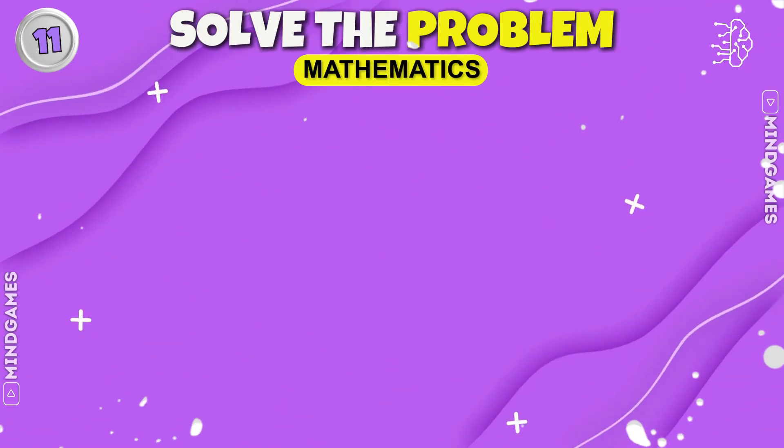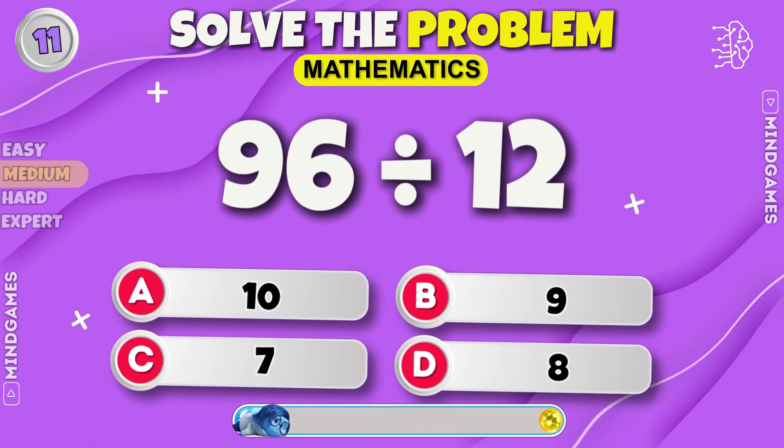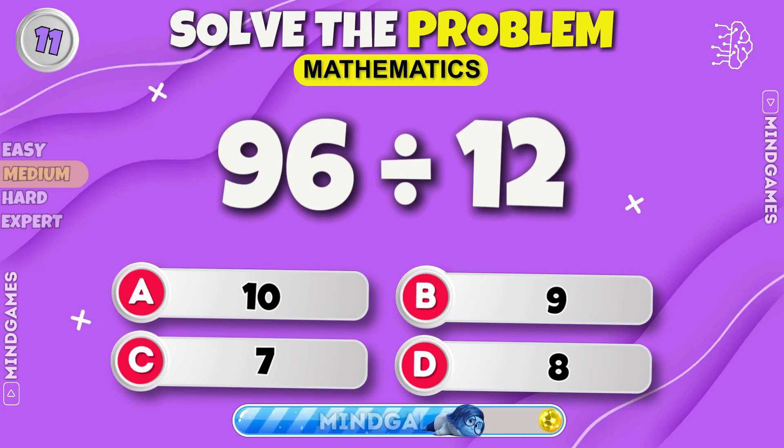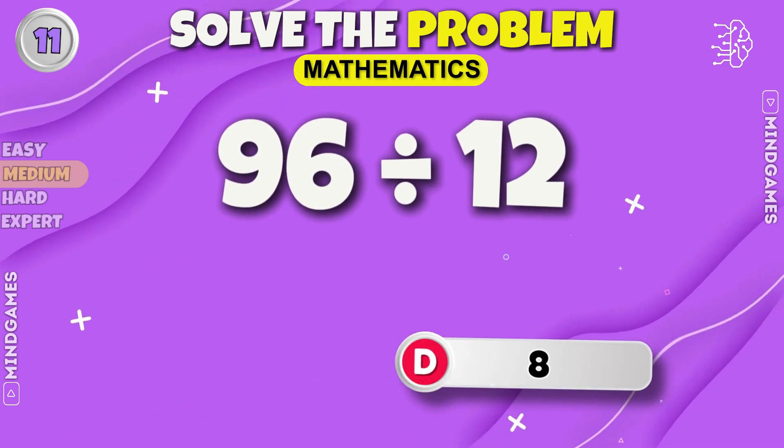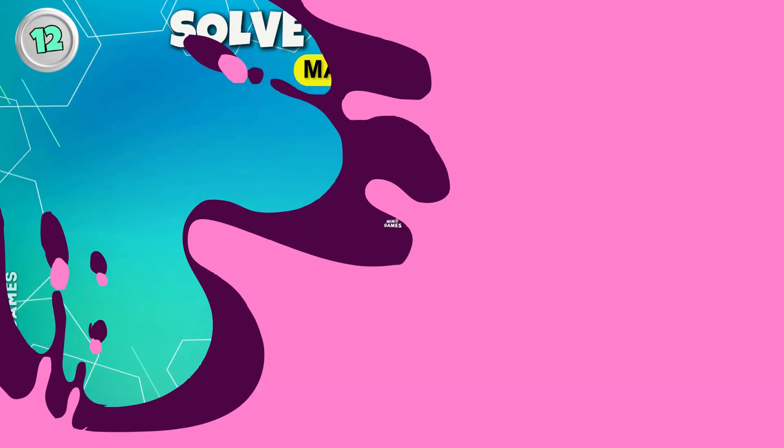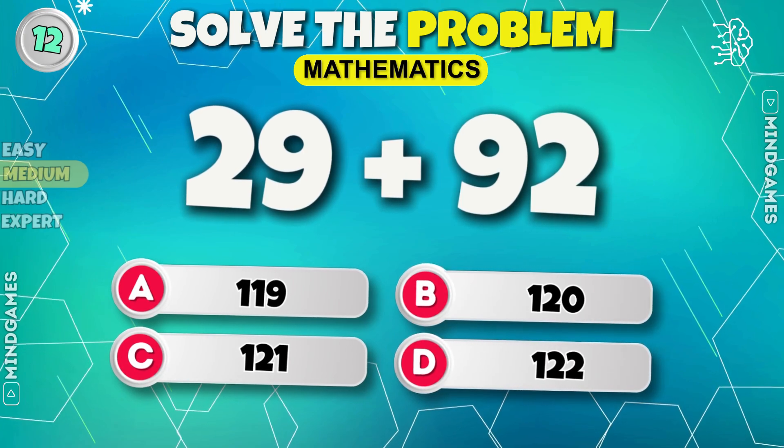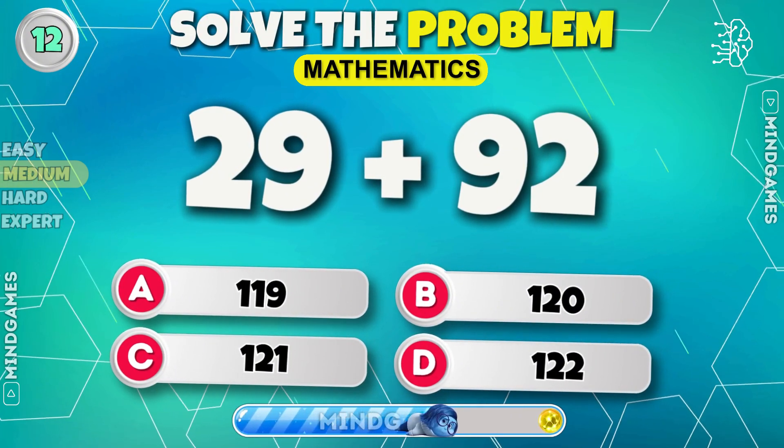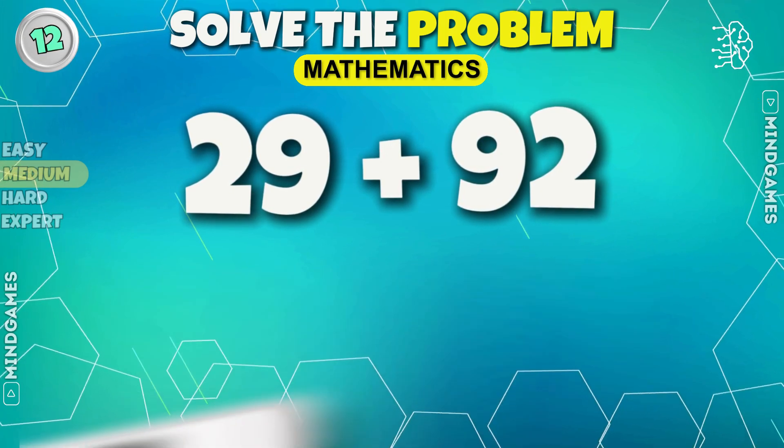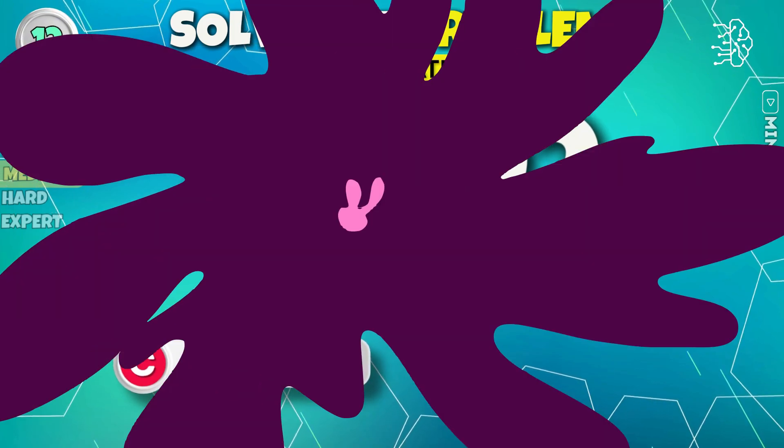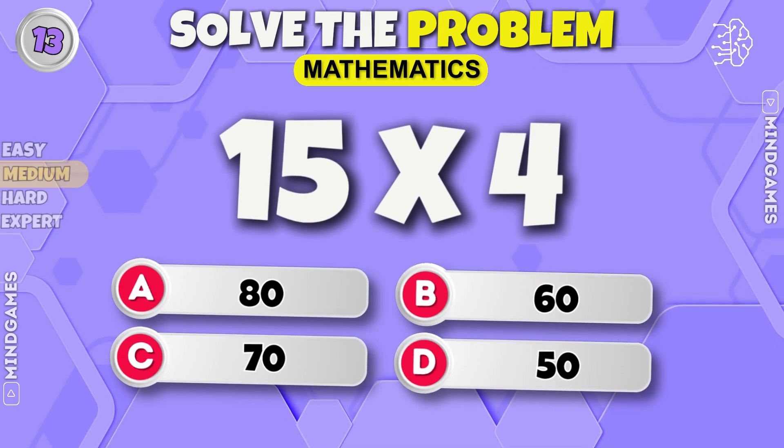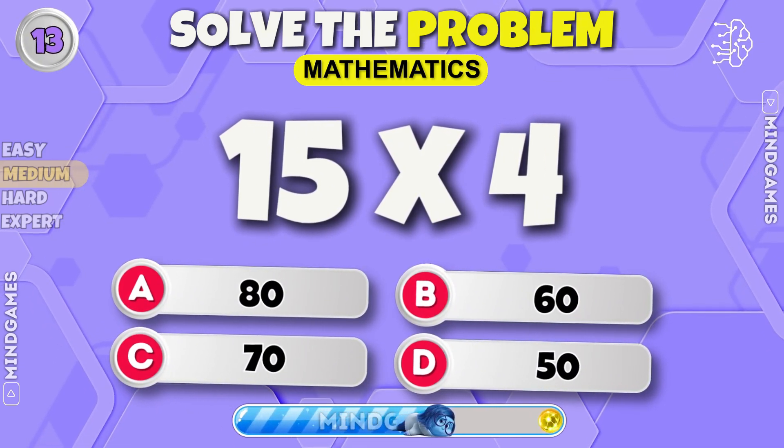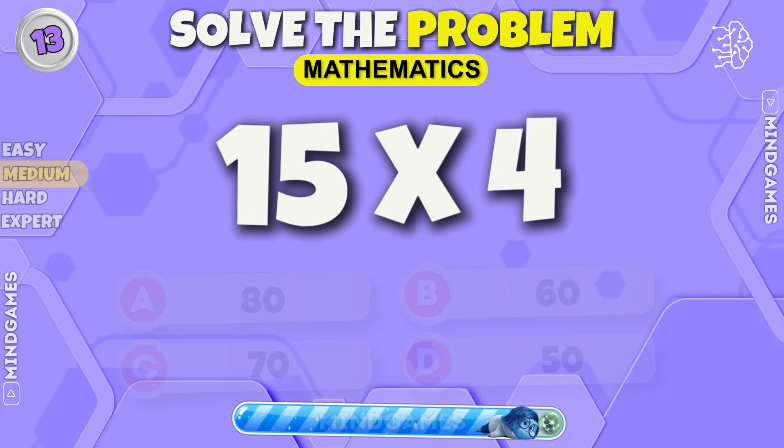Let's move on to medium level. Now solve this one. 8 is the right answer. What is 29 plus 92? 121. 15 into 4. 60.